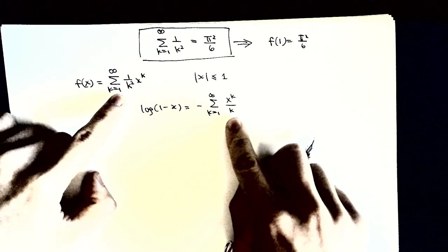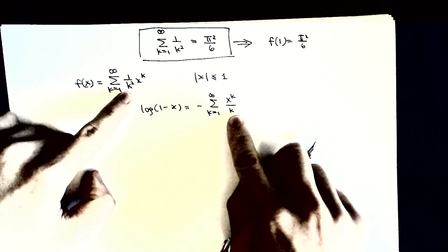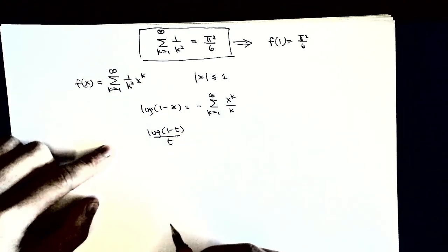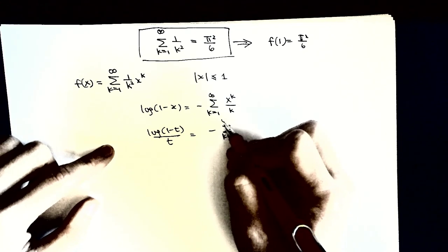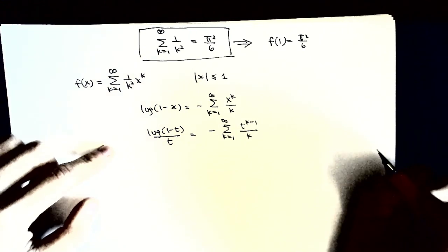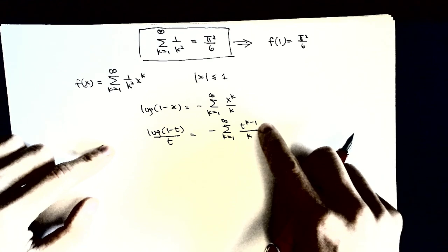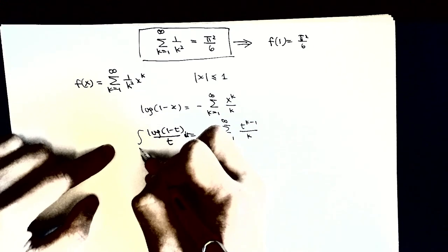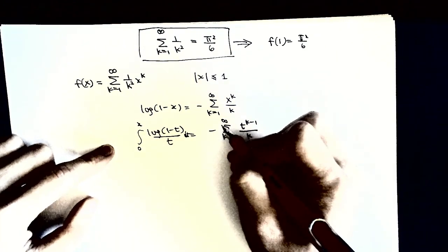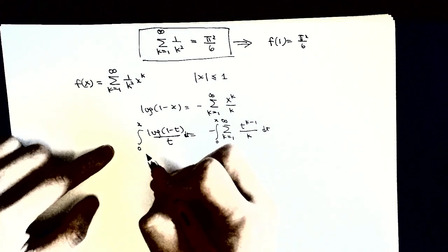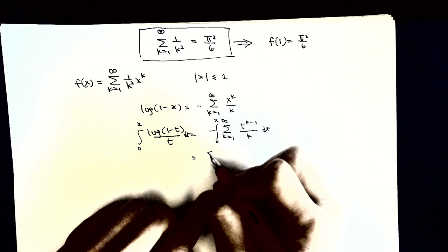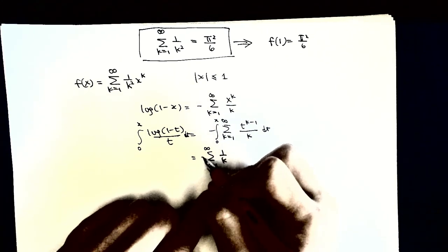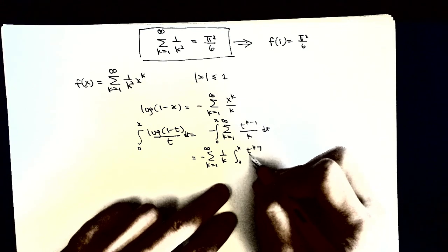This expression looks very similar to our series, except that here we have k and there we have k squared. We want to make it become k squared. We divide, and then after integration the exponent becomes k minus 1 over k, and we can raise this power by 1 to get another k, making k squared. So we perform the integration from 0 to x on both sides, also integrating from 0 to x with respect to dt. We switch the infinite sum and the integral.